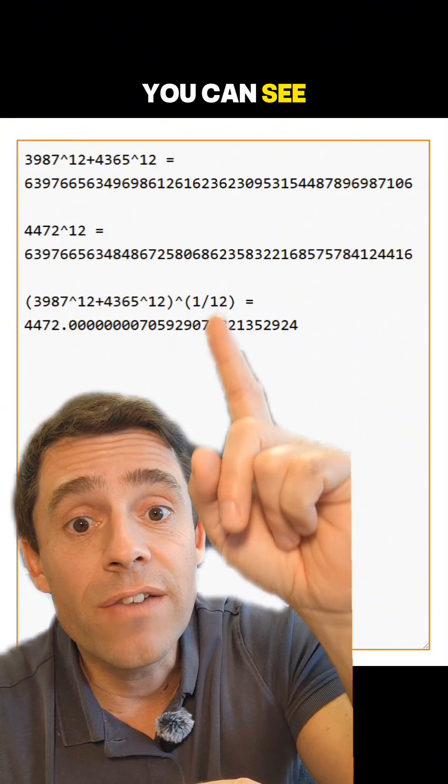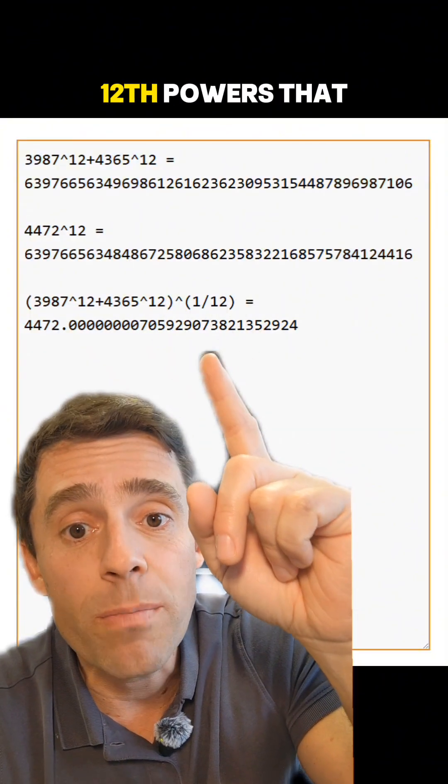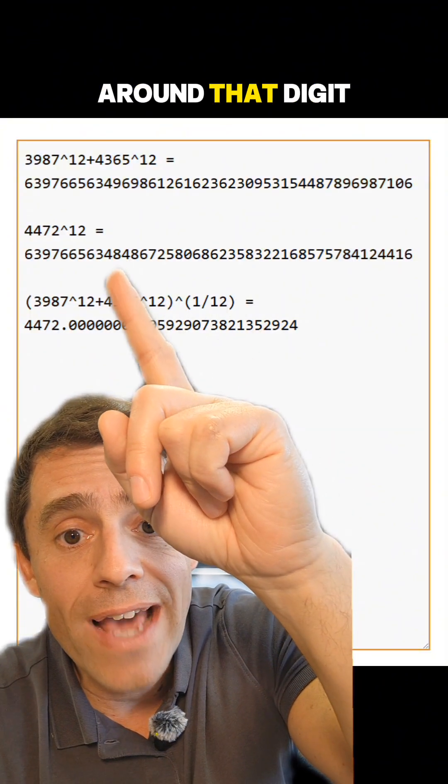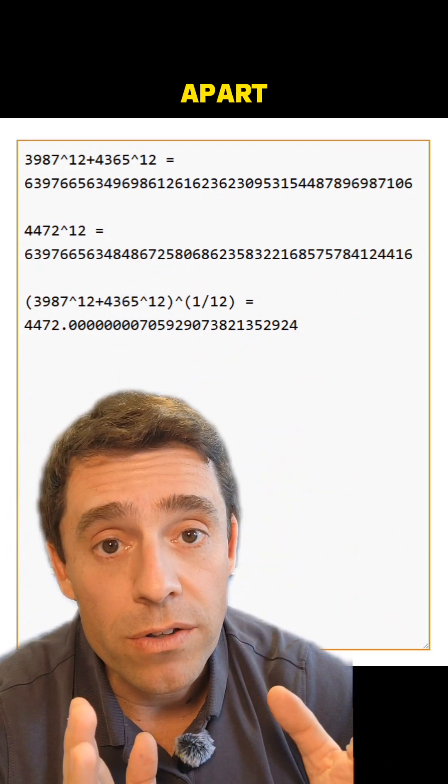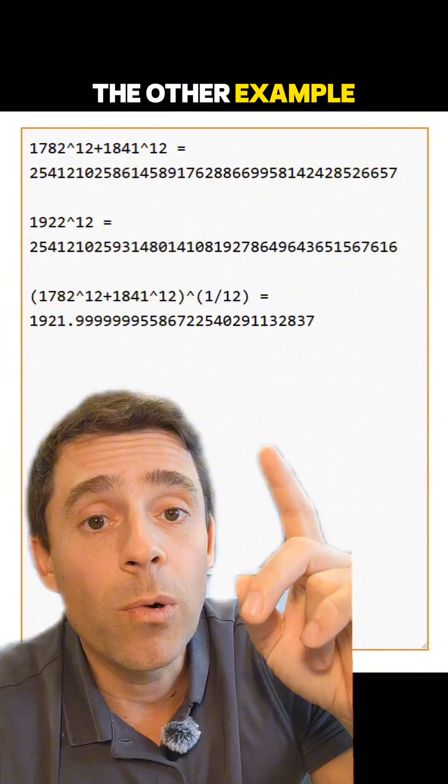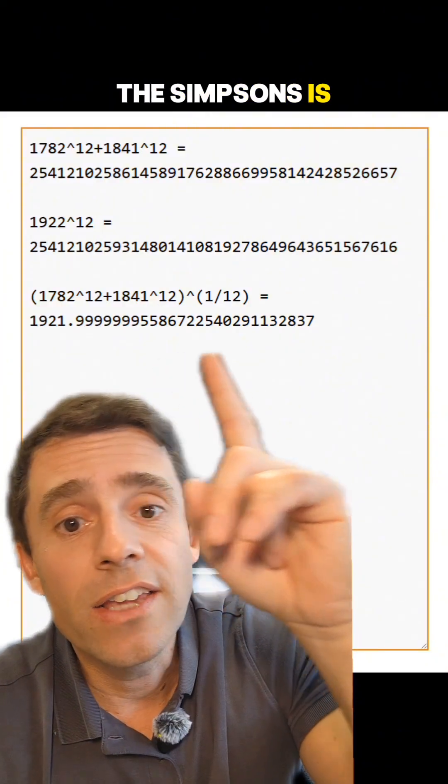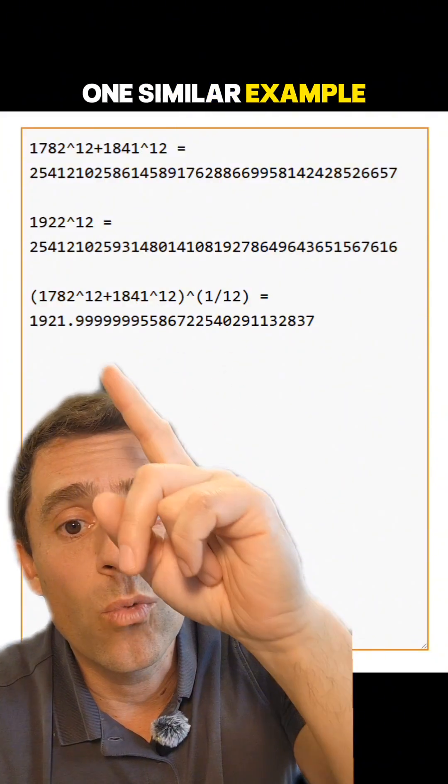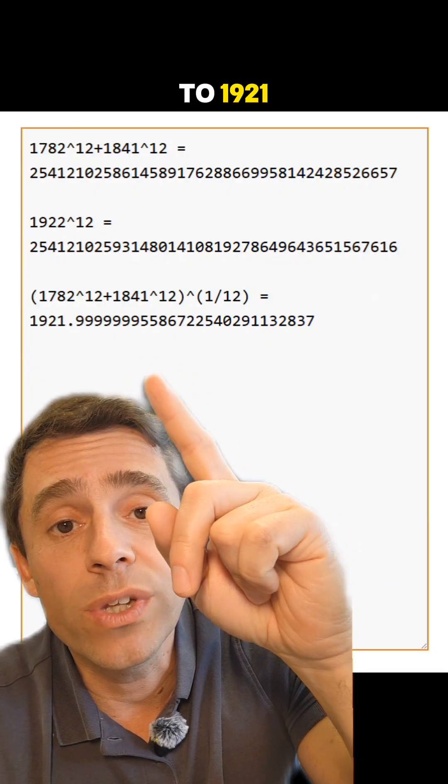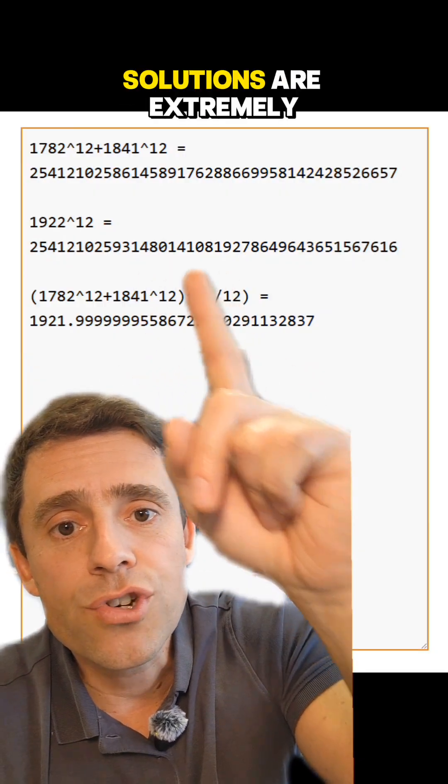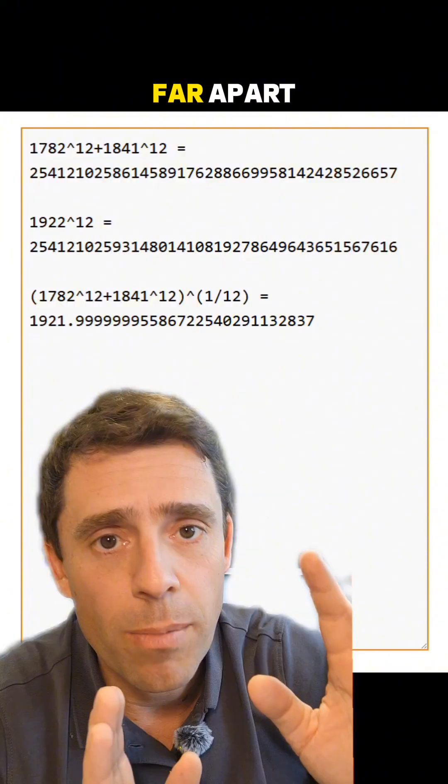And in fact, you can see if you expand those twelve powers that around that digit right here, they start differing. So they are actually very far apart. Similarly, the other example that appears in The Simpsons is one similar example where the twelfth root is very close to 1921, but the actual solutions are extremely far apart.